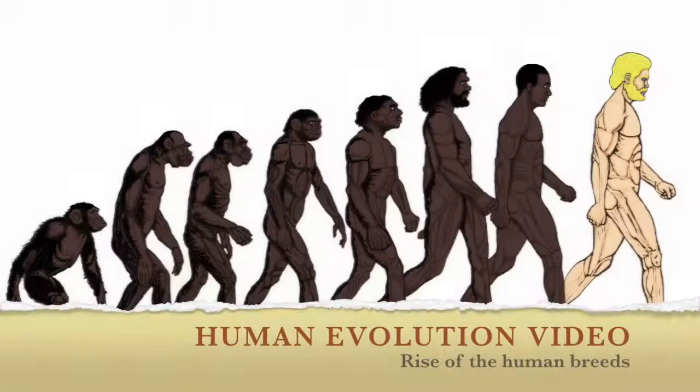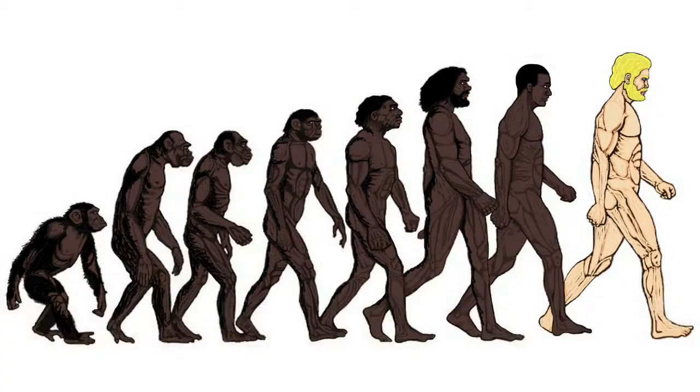This is a summary of the evolution of the differing human breeds of man. Timescales given are a general approximation.